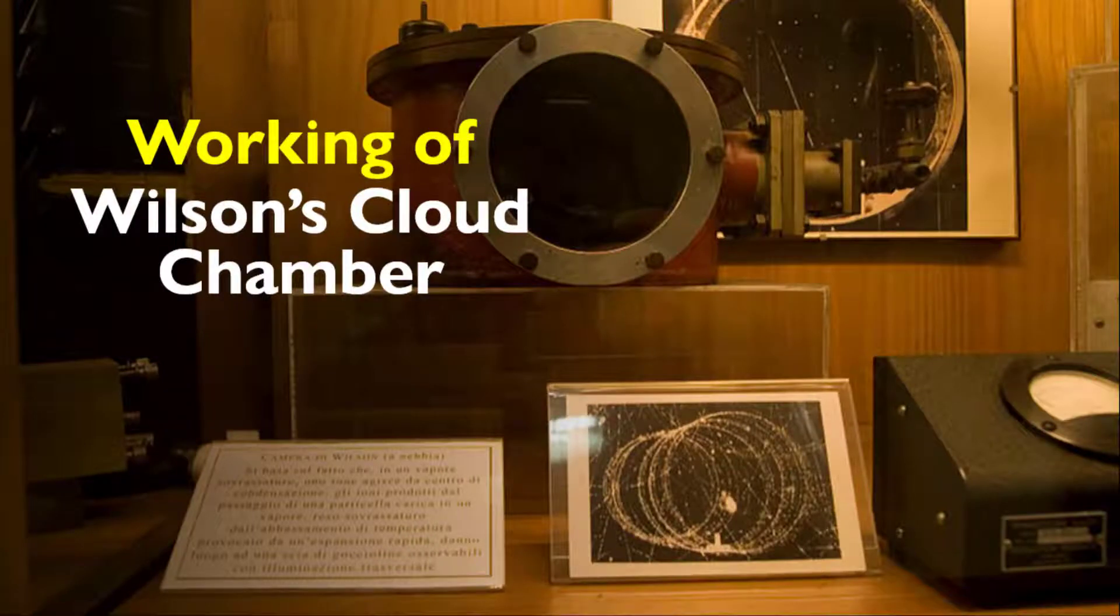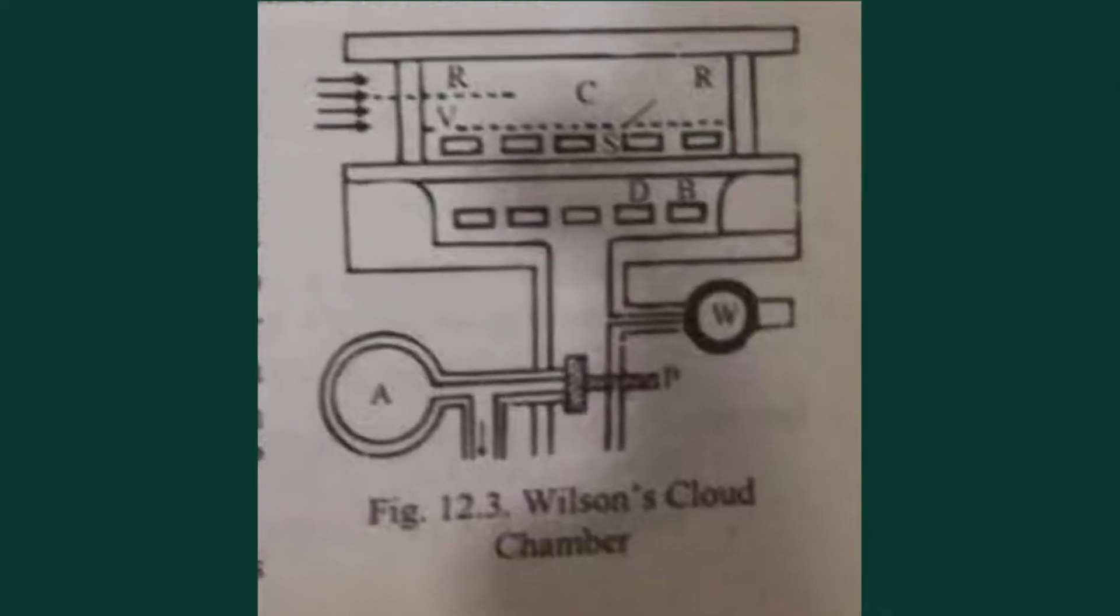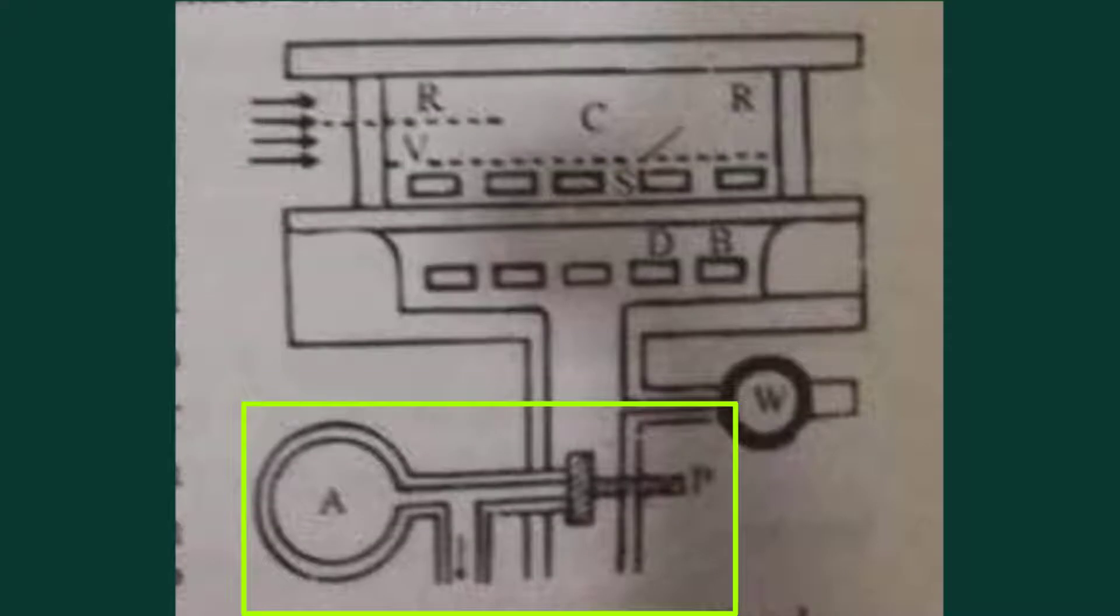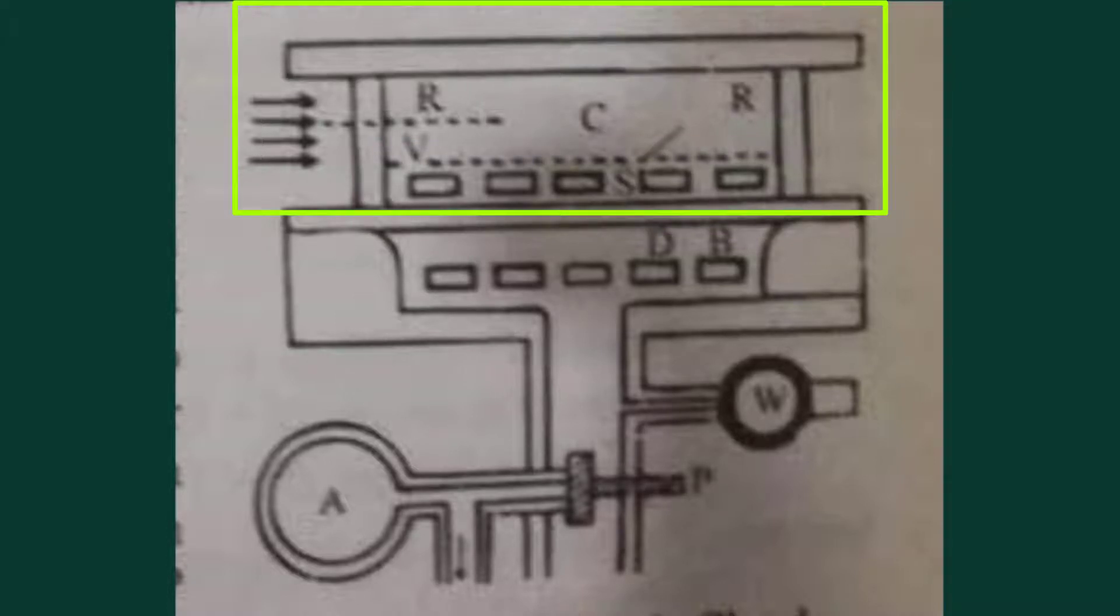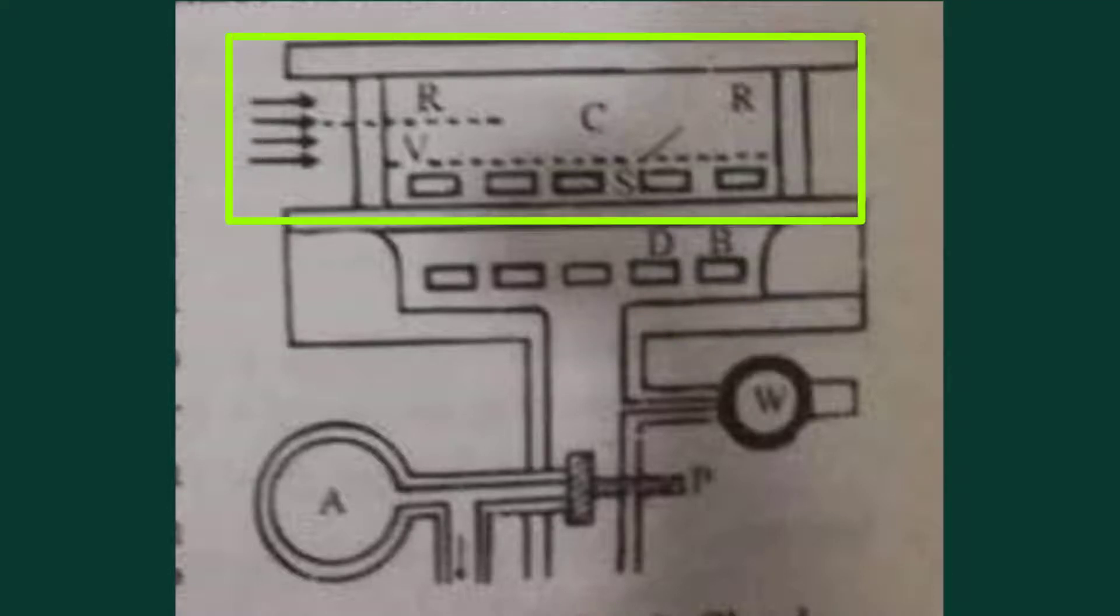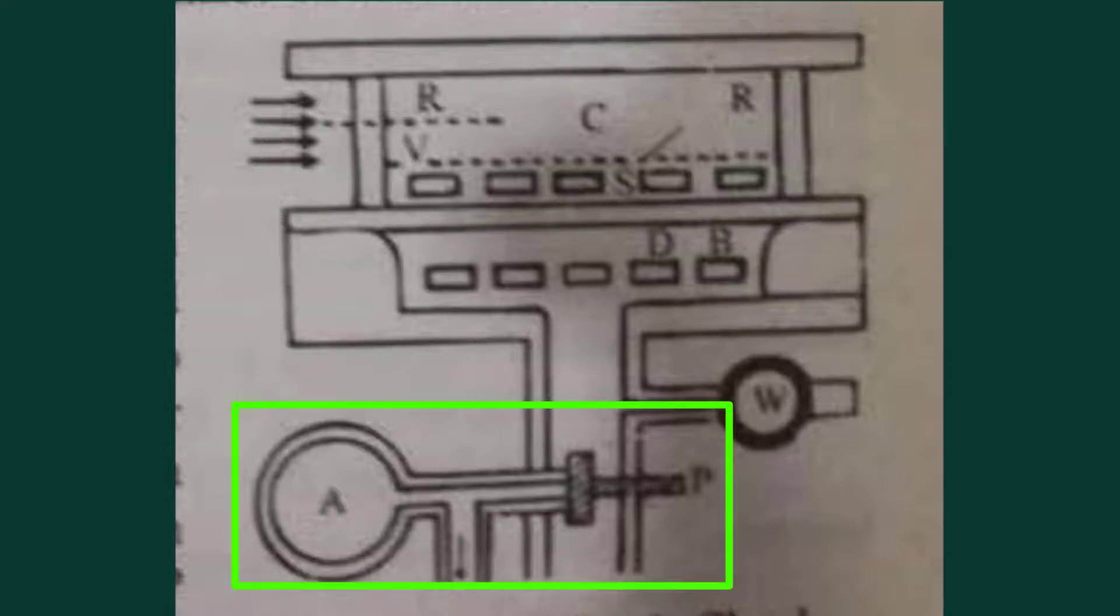The working of Wilson's cloud chamber: when piston P is withdrawn, the space S is connected to the container A. The pressure in the space S suddenly falls. This pulls down the diaphragm D and the air in the chamber C undergoes expansion. As the diaphragm goes downwards, the chamber expands. After expansion, the container A is closed by piston P.